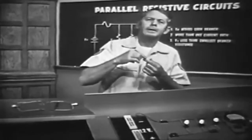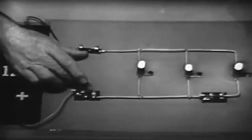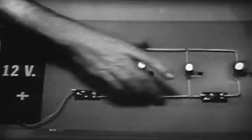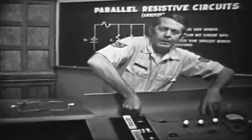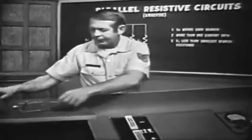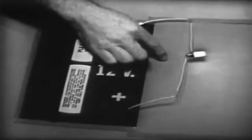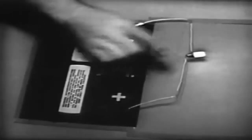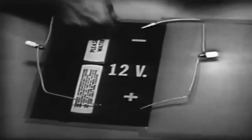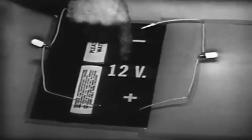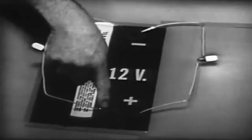The parallel circuit has more than one path for current. What about the voltage? Notice on this trainer that each branch is connected directly across the battery. Let's investigate this further by building a parallel circuit. I'll start by connecting one bulb across the battery. When the bulb is placed in this manner, it's obvious that the applied voltage is across the bulb. If I place a second bulb here, it's obvious that I still have the applied voltage across each light, because each branch is connected directly across the battery.